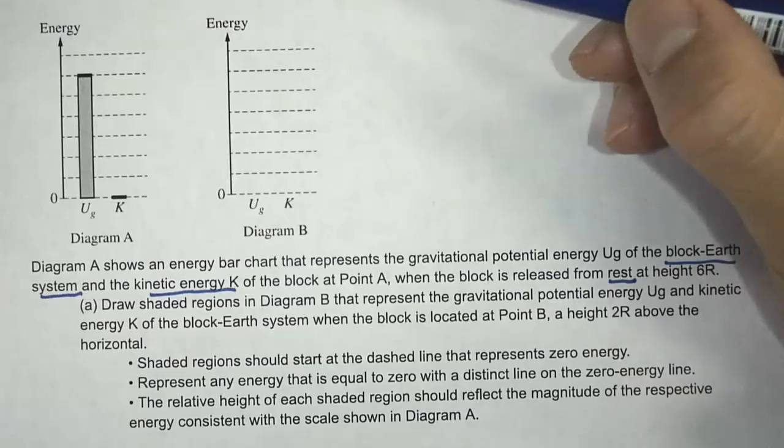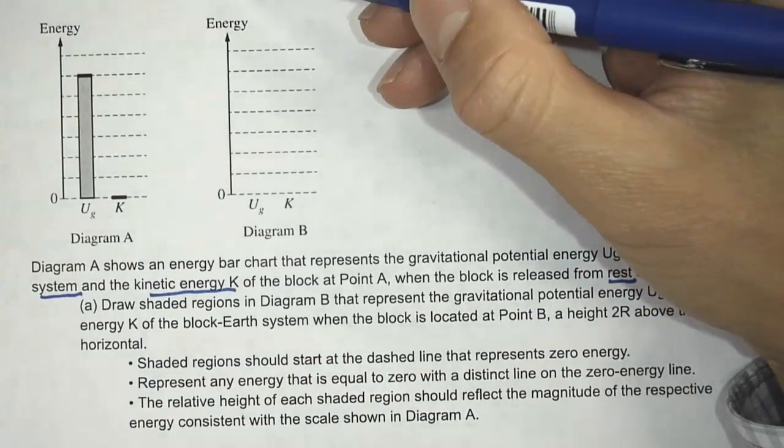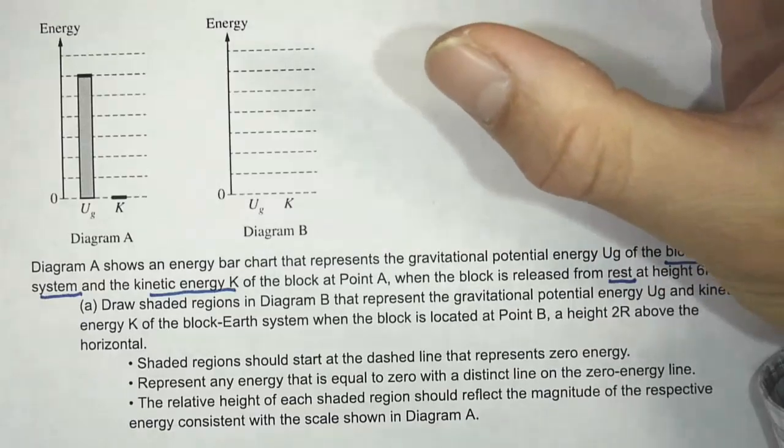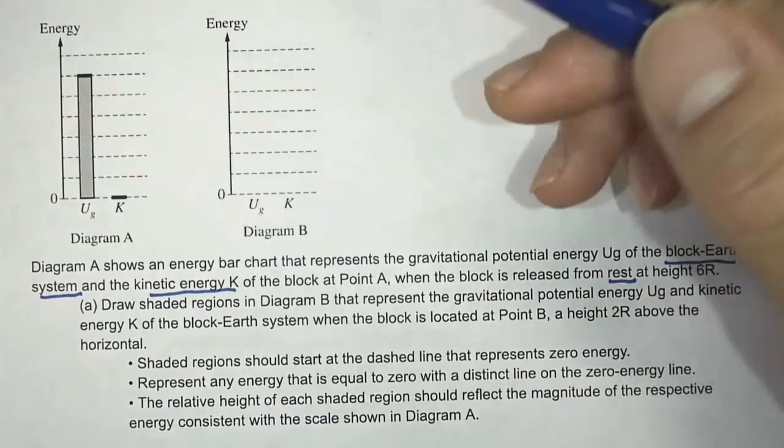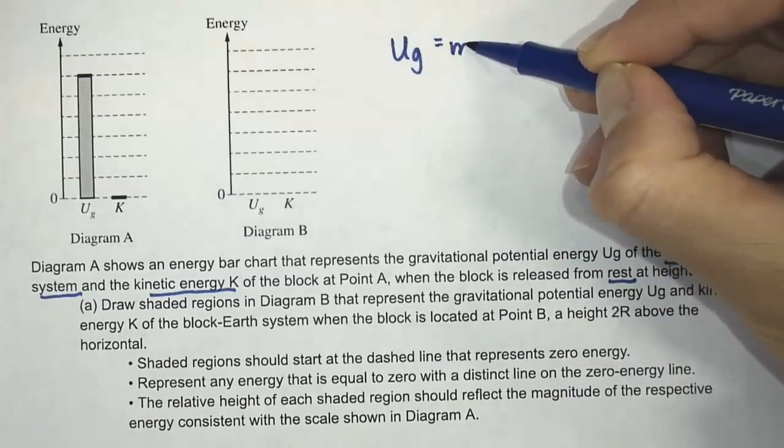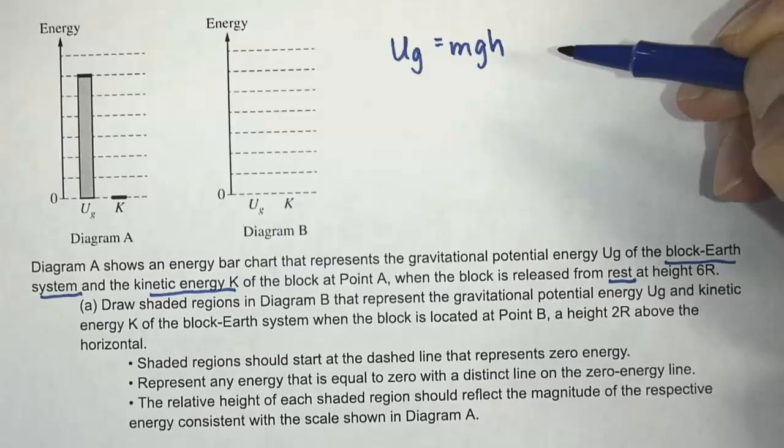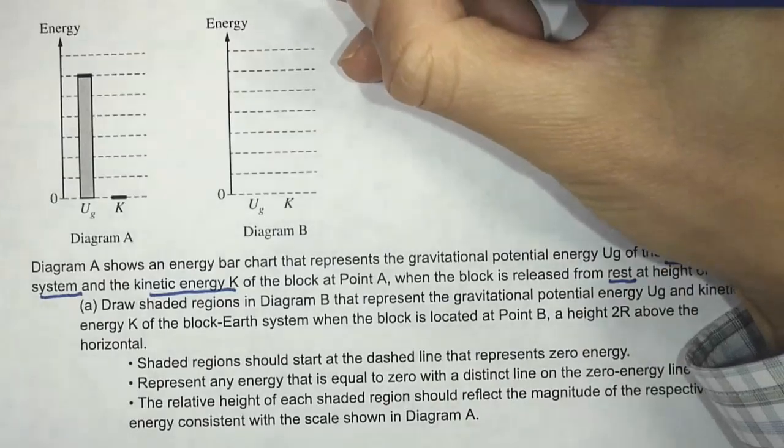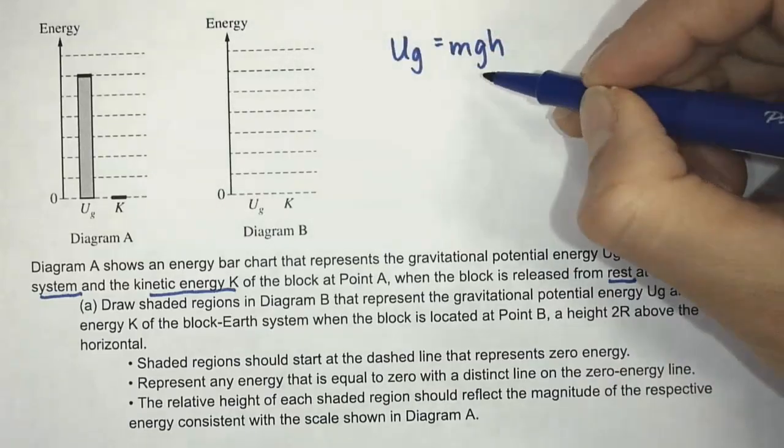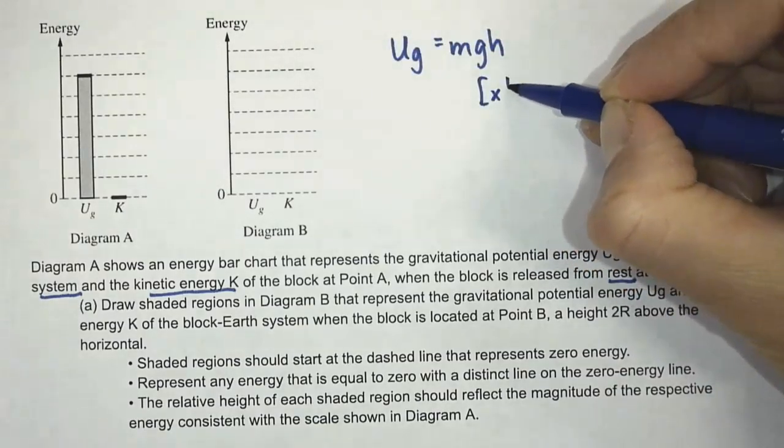So at location B, we have two forms of energy here. We've got gravitational and we also have kinetic energy. Now we know that gravitational potential energy is MGH. And so since this height is 2R and it starts at 6R, it's a third. So the height is only one third.